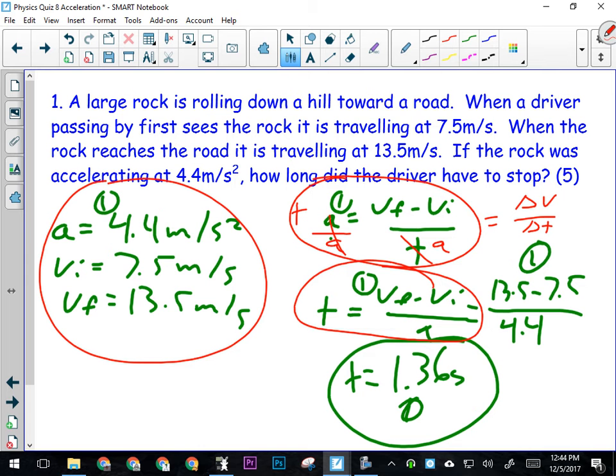Then they got to plug their numbers in correctly. 13 and a half, the final velocity minus seven and a half, the initial velocity divided by the acceleration 4.4. Give them a mark for that. And that should come out to 1.36 seconds.